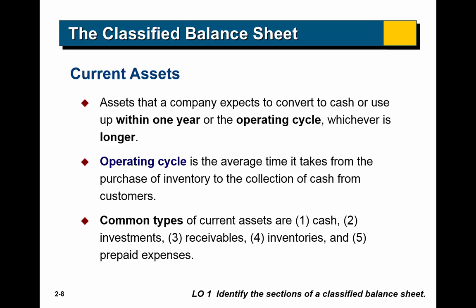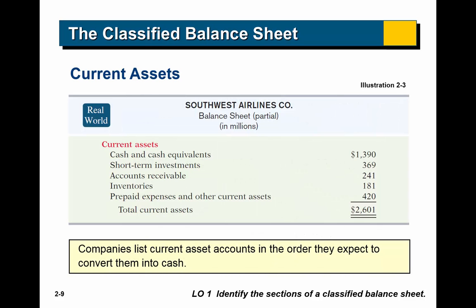The most common current assets you'll see are: cash — that's pretty current, it's already cash; short-term investments that we expect to turn into cash rather quickly; receivables like accounts receivable, money owed to us that we expect to collect; and prepaid expenses — for example, if we pay insurance for a year, we expect to use that insurance up within the next year. They're usually listed in the order they're expected to convert to cash, so cash comes first, then often accounts receivable, then inventories and prepaid expenses.